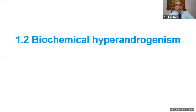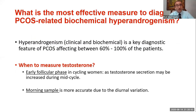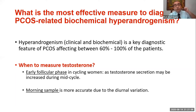Regarding biochemical hyperandrogenism, it is present either clinically or biochemically in 60 to up to 100% of patients depending on the defining criteria used. When to measure: it's not any time of the cycle. Preferably it should be measured early in the follicular phase because testosterone secretion may increase at mid-cycle. Morning samples are more accurate due to diurnal variation.